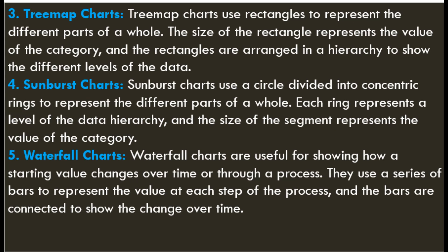3. Tree Map Charts — use rectangles to represent the different parts of a whole; the size of the rectangle represents the value of the category, and the rectangles are arranged in a hierarchy to show the different levels of the data. 4. Sunburst Charts — use a circle divided into concentric rings to represent the different parts of a whole; each ring represents a level of the data hierarchy, and the size of the segment represents the value of the category. 5. Waterfall Charts — useful for showing how a starting value changes over time or through a process; they use a series of bars connected to show the change over time.